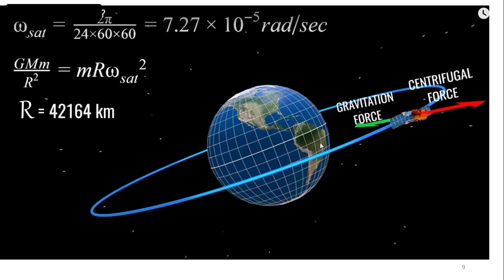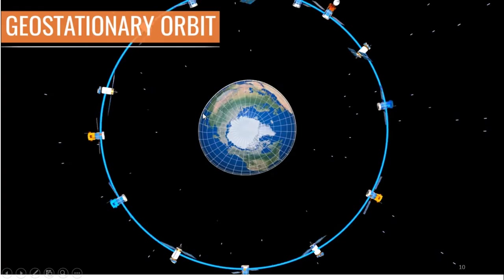If there is some mismatch, we will not get the signals. The geostationary orbit is at 42,164 kilometers from earth. Many satellites placed by different countries are in this geostationary orbit, and they can broadcast their signals to specific parts of the earth. As the earth revolves, these satellites also revolve with the constant velocity matching that of the earth.